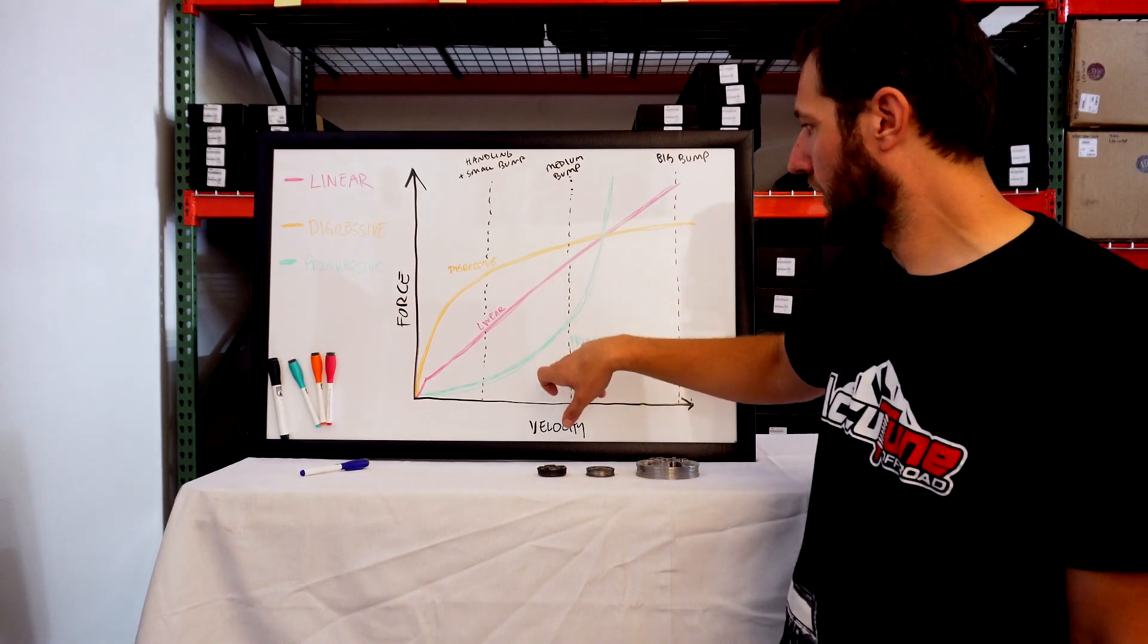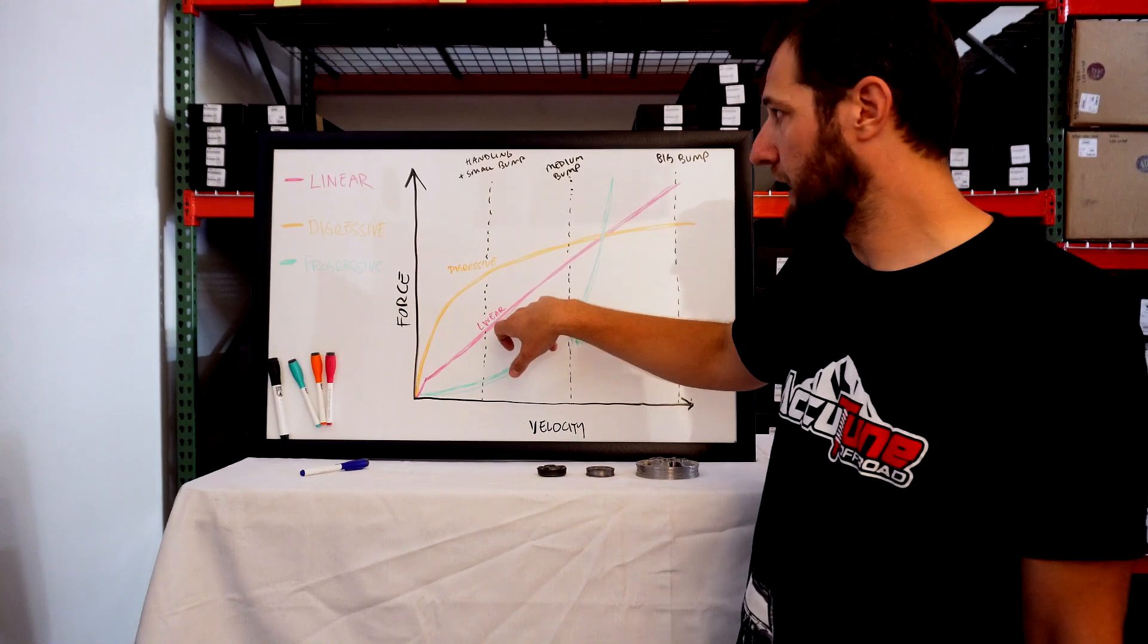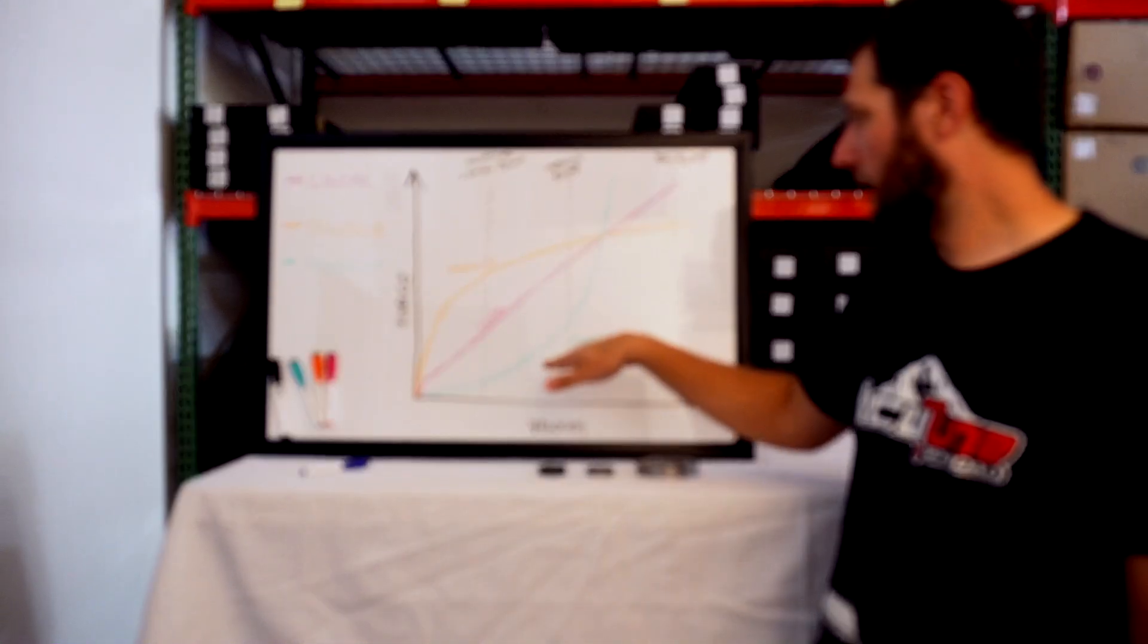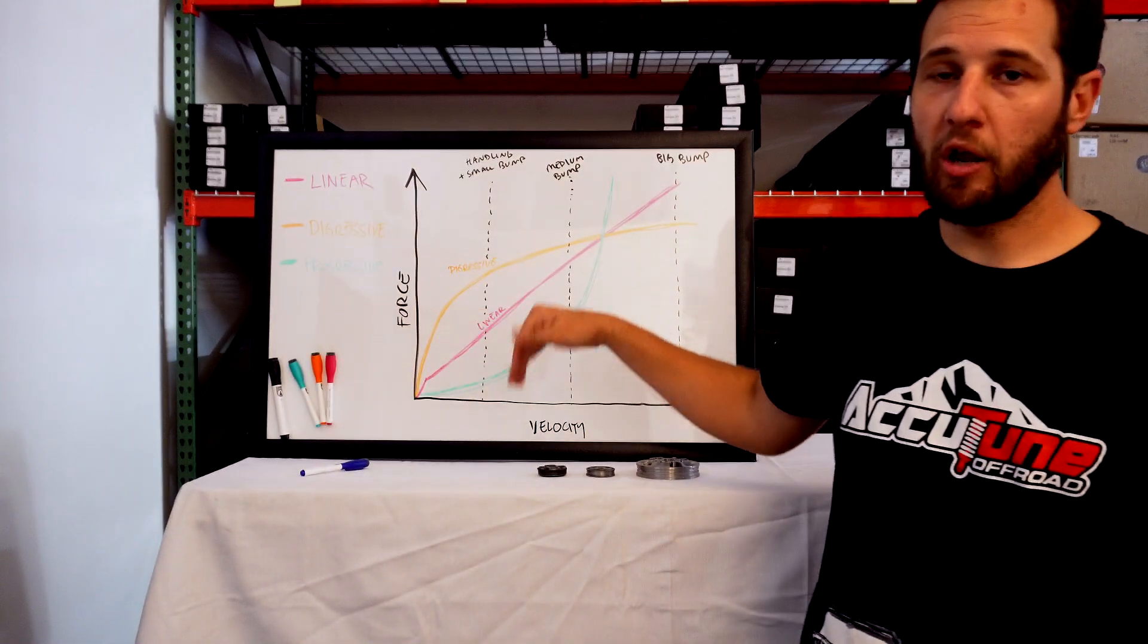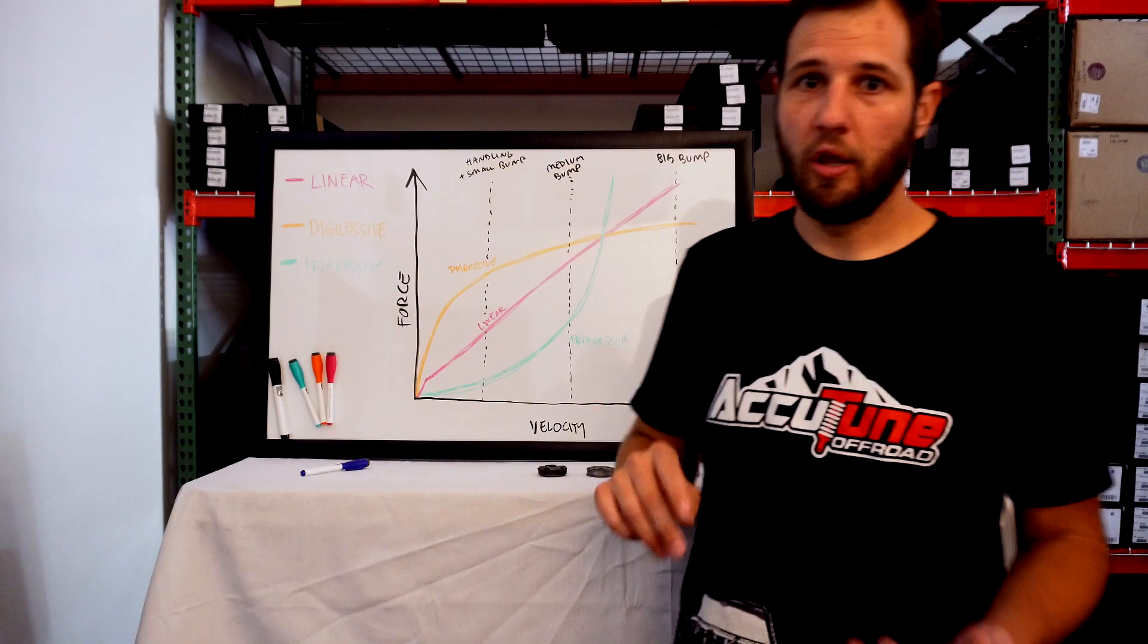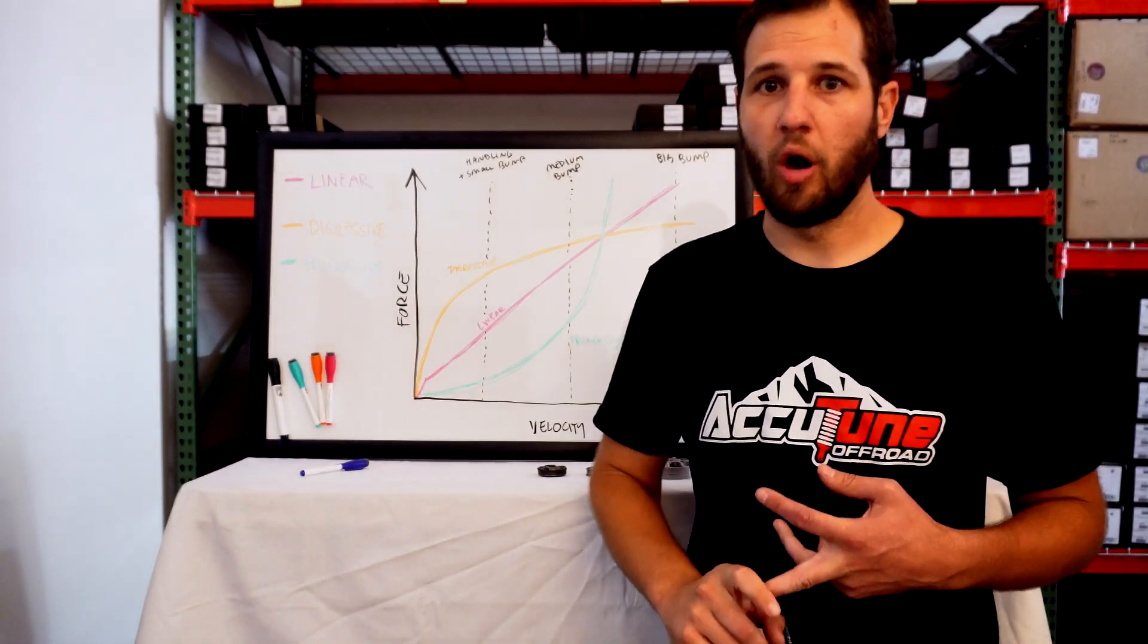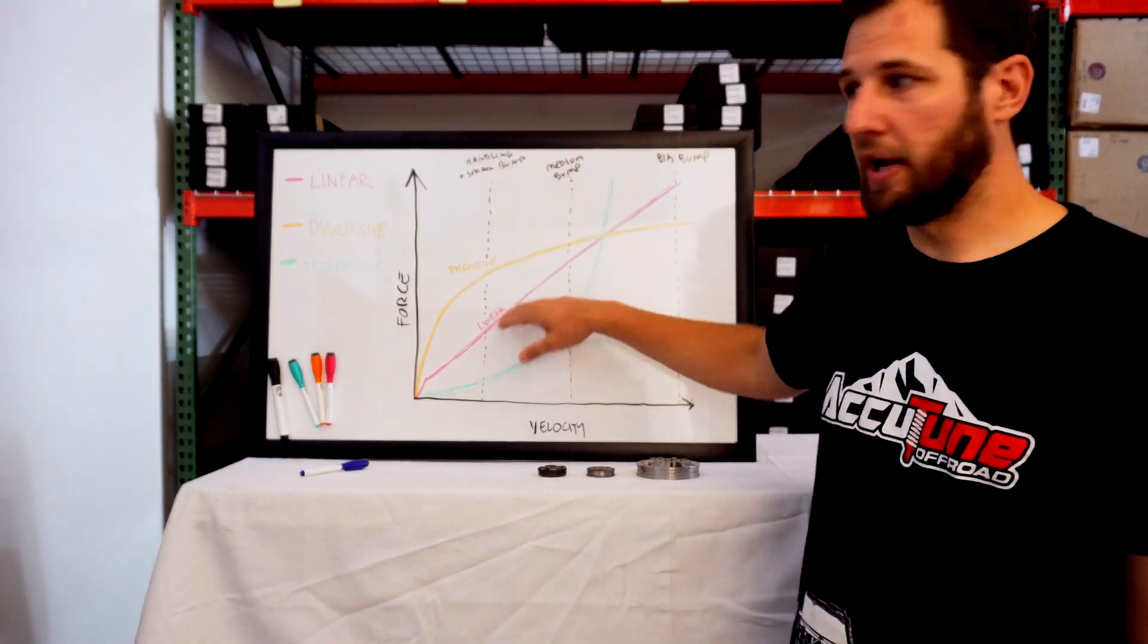The position sensitivity will actually bump you up into a linear or digressive curve as you start to bottom out. So an external bypass shock, your curve will actually go from progressive, and as you start closing off tubes you go to linear, and then finally near the bump zone it's actually digressive. You can kind of see here why external bypass shocks are the best.